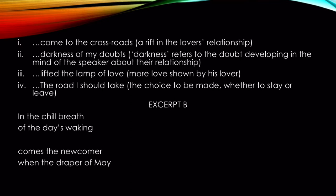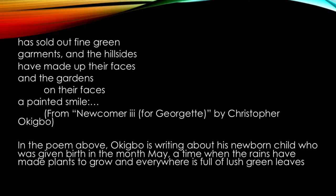Instances of metaphor in the poem above include: 'come to the crossroads,' and 'darkness of my doubts' — where darkness refers to the doubt developing in the mind of the speaker regarding the relationship. 'Lifted the lamp of love' is also a metaphor. Okigbo is writing about a newborn child given birth in the month of May, a time when rains have made plants grow and everywhere is full of lush green leaves. Okigbo compares May to a draper — the green vegetation covering everywhere is compared to garments.